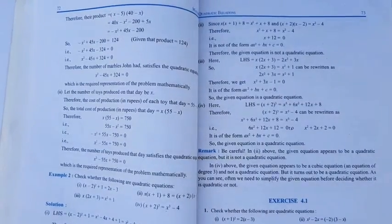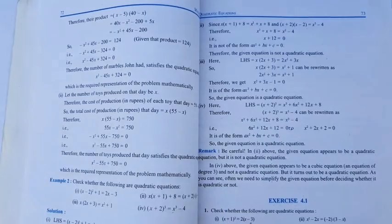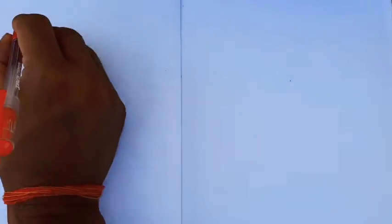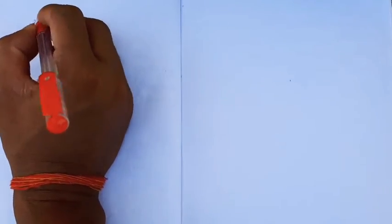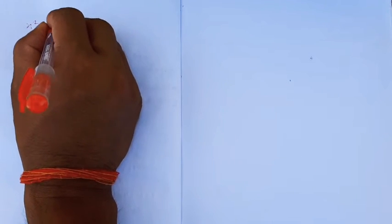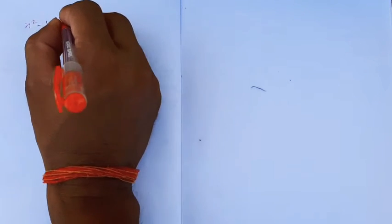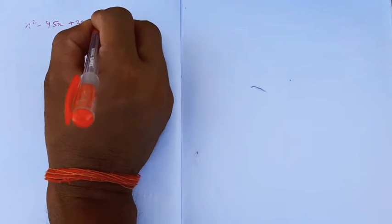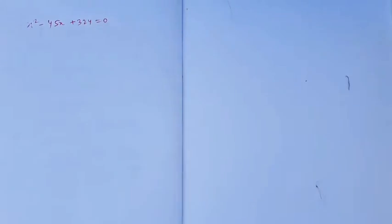The first quadratic equation is x² - 45x + 324 = 0.